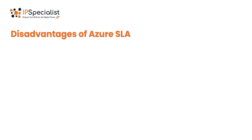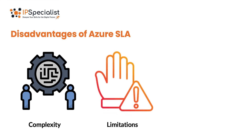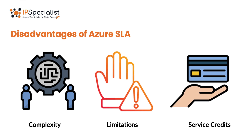Along with benefits, Azure SLA also has some drawbacks. The first is its Complexity — Azure SLA documents can be lengthy and complex, containing technical jargon and legal language that may be difficult for non-technical users to understand. Next, it has some Limitations — Azure SLA often includes exclusions and limitations that define scenarios where the SLA commitments do not apply. Lastly, Service Credits — while service credits are provided to compensate customers for downtime, the actual value of these credits may not always fully offset the financial losses incurred by customers during service outages.